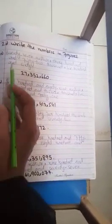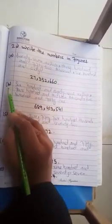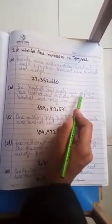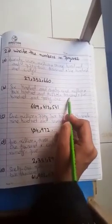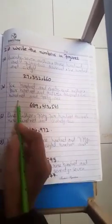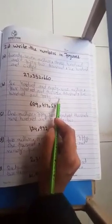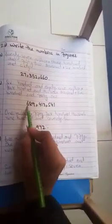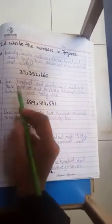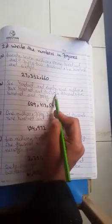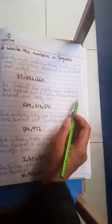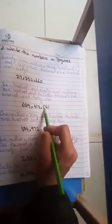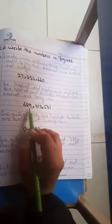Which was given in words. Now we have 689,413,541. This is our number in figures, 689,413,541. This is our number in figures.